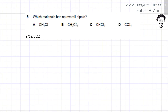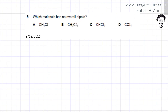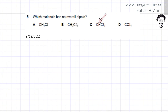The question asks which molecule has no overall dipole, and you're given four options. Looking at all the options, it's basically just one carbon bonded to four atoms. Carbon is bonded to three hydrogens and one Cl atom; two hydrogens and two Cl atoms; one hydrogen and three Cl atoms; and four Cl atoms.